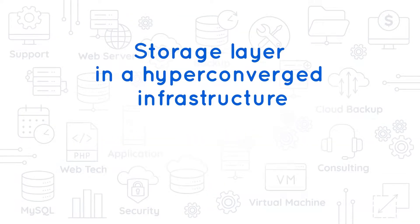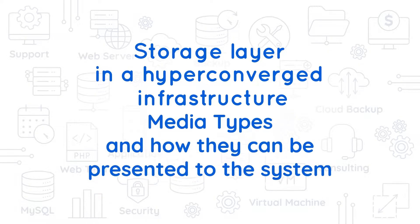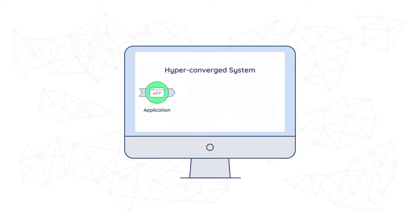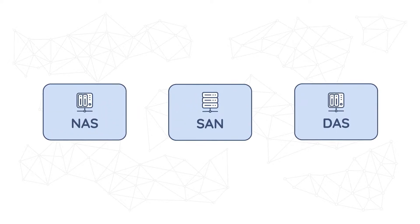In this video, we'll cover the storage layer in a hyperconverged infrastructure, media types, and how they can be presented to the system. In the previous video, we highlighted the main protocols and how they interconnect storage and network layers in a hyperconverged system. Now it would be appropriate to talk about the storage itself. Before we jump into the storage media comparison, let's first get an understanding of how storage can be presented to the servers.